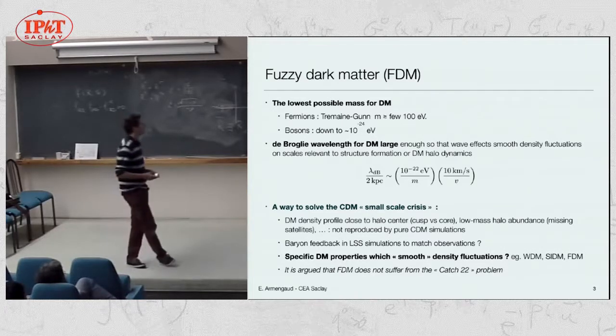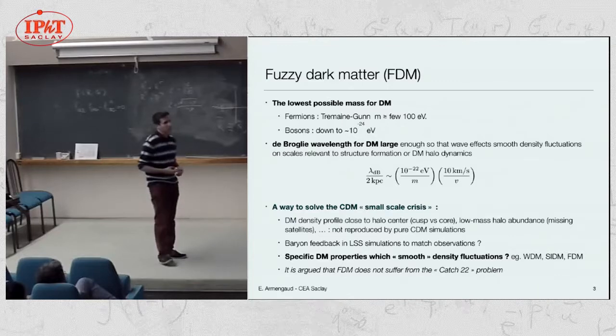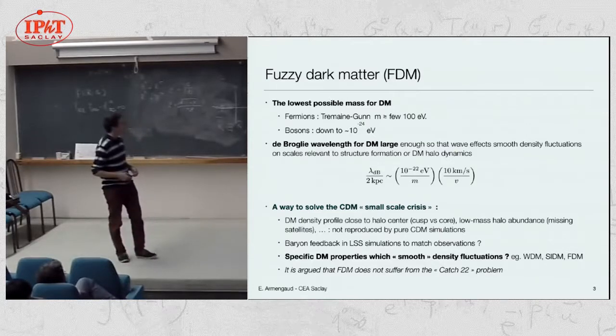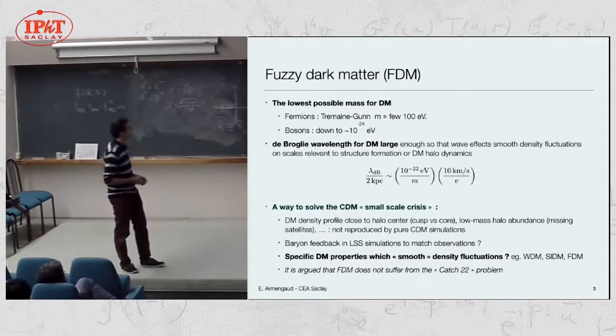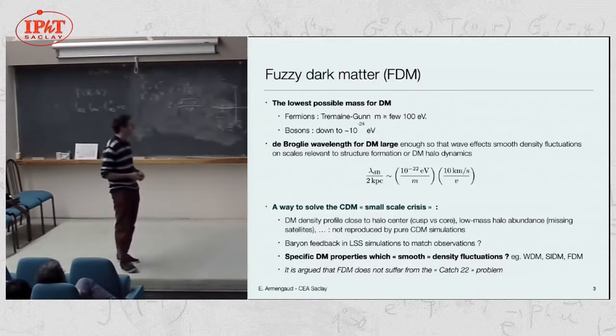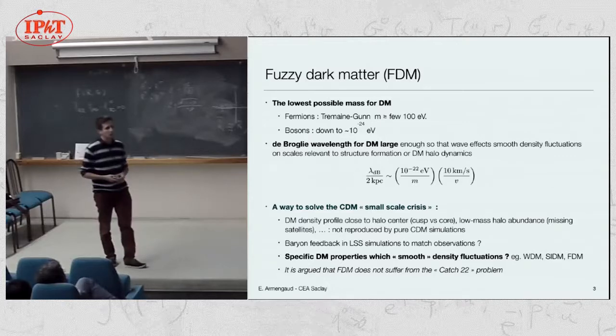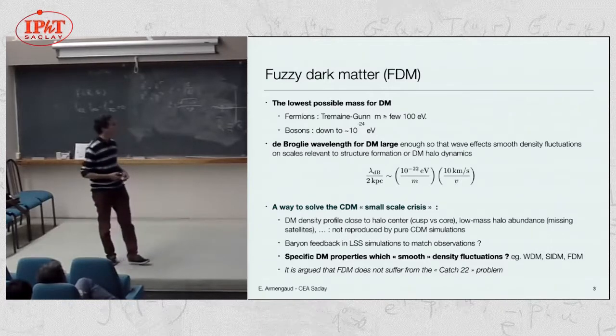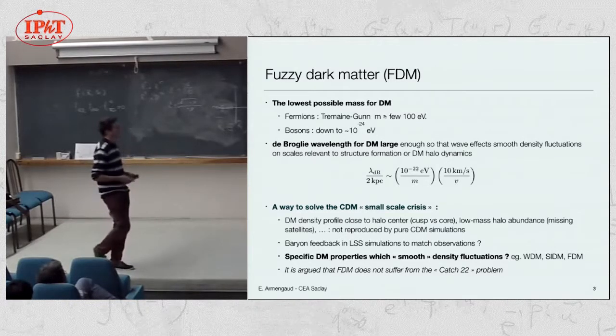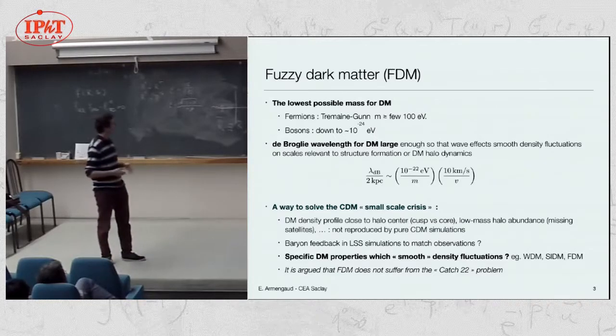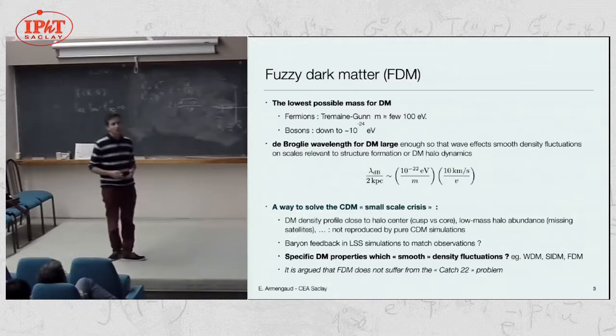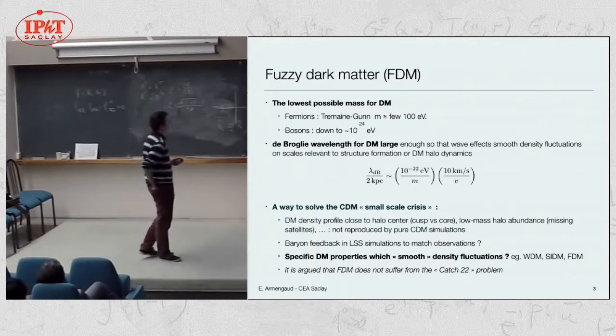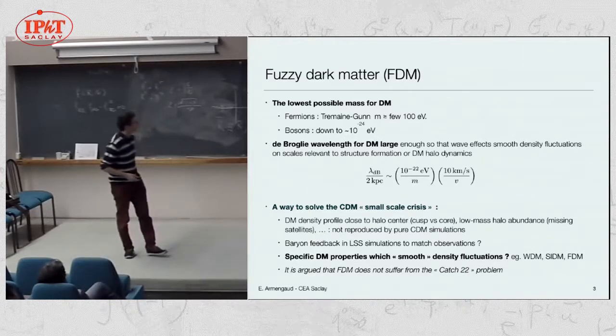At this mass, the uncertainty principle implies that there is a length scale, the de Broglie wavelength. This wavelength becomes really big on astrophysical and cosmological scales. This formula illustrates the order of magnitude for a 10 to the minus 22 eV particle with velocities typical of very small galaxies. You get the size of the galaxy. All the phenomenology of halo dynamics and large-scale structure formation is then changed.